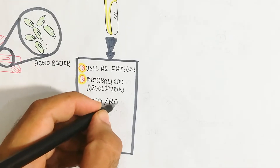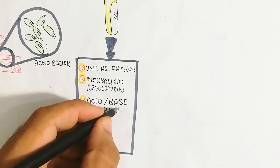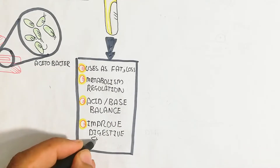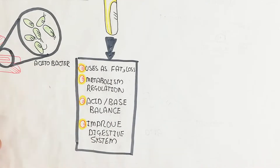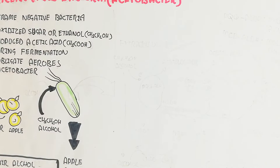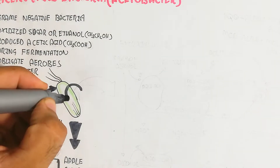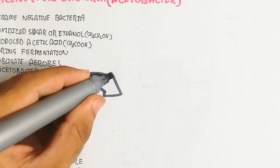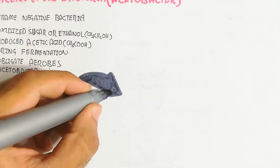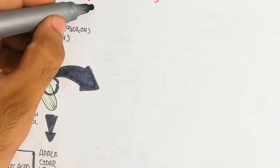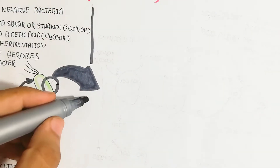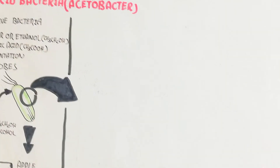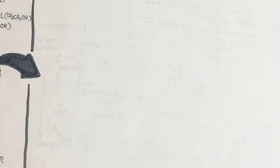Acetic acid from vinegar is important for fat loss, metabolism regulation, acid-base balance, and improving the digestive system. The mode of action of vinegar in body physiology will be discussed in the next video; here we focus on acetobacter's conversion of ethanol to acetic acid.